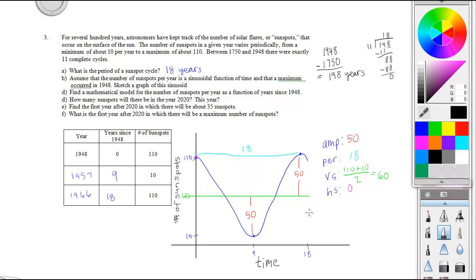The equation for the sunspot problem: f(t) equals the vertical shift 60, plus the amplitude 50, times the cosine of the period. The b value equals 2π over 18, which simplifies to π over 9. Then the time, and then 0. So 60 plus 50 cosine π over 9t will give us the function for the sunspot problem.